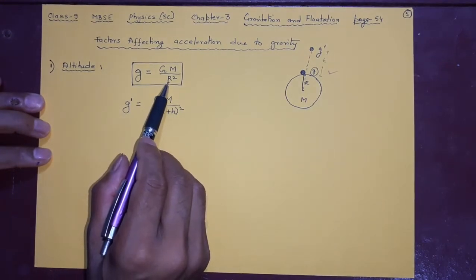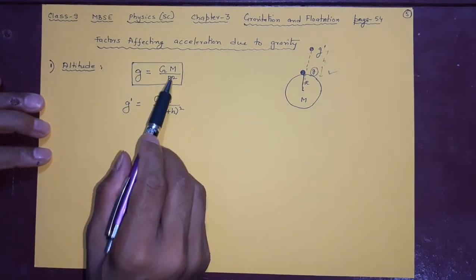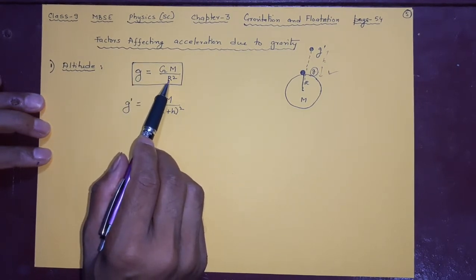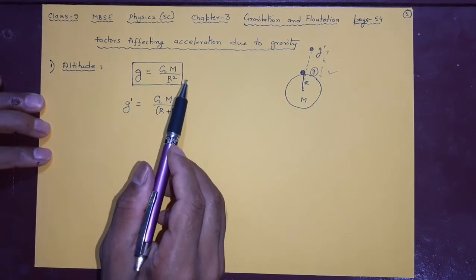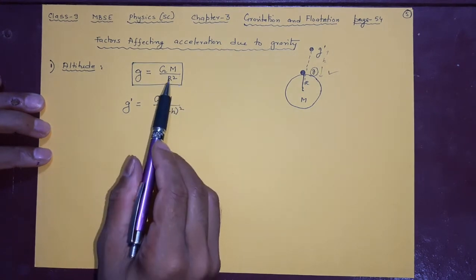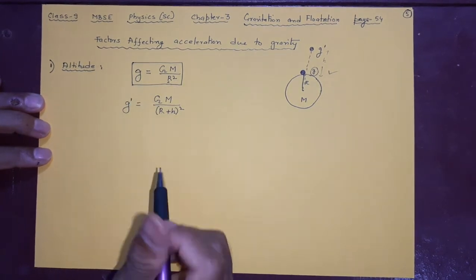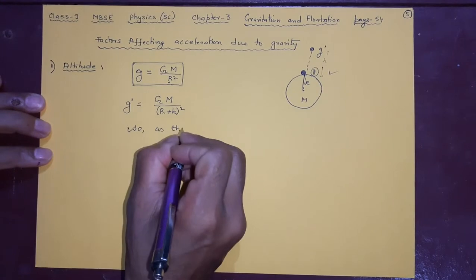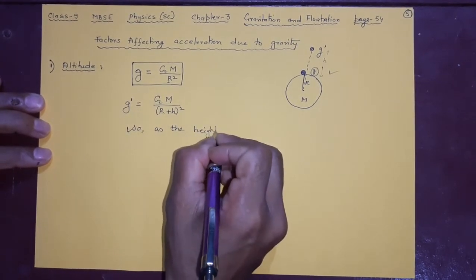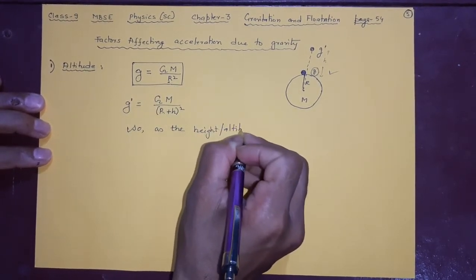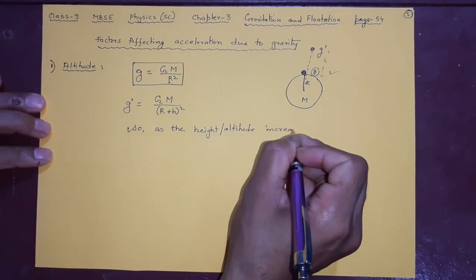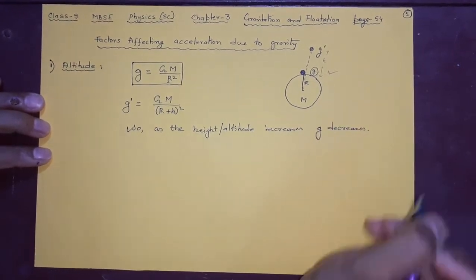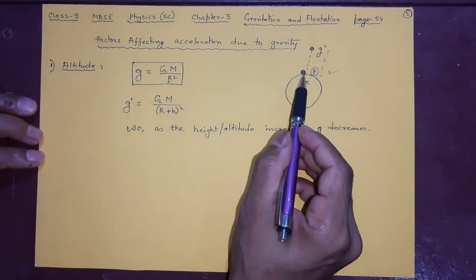Now, r will increase to r+h, so r+h squared is the denominator. This is very important — if anything increases in the denominator, the value of the fraction decreases. If r is 6.4 × 10⁶ meters and it becomes more, then g will become less. So as the height or altitude increases, g decreases.